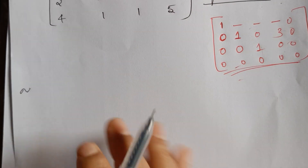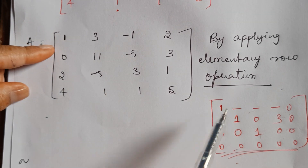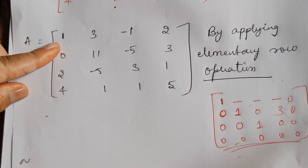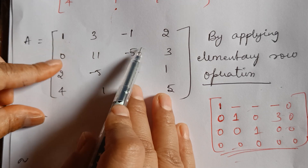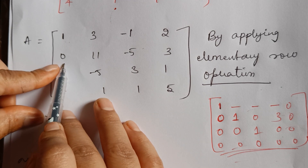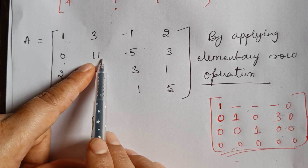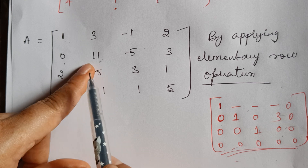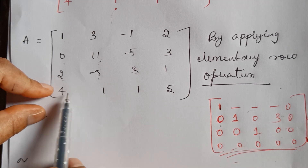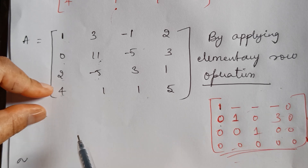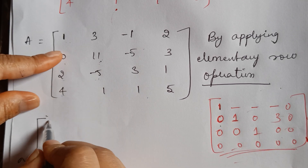So we perform some operations to get the matrix into echelon form. I already have a 1 in row one, so I will not touch row one — I will not perform any operation on it. And in the second row, I already have zero in the first column, which is what I wanted. But here I have 11 which is non-zero, so I'm planning to take care of this at the end. I'll leave row two as it is. But for row three, I want zero in the first column, so I'll perform row operations there.